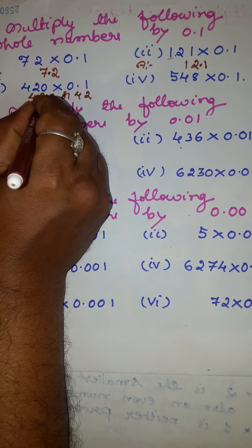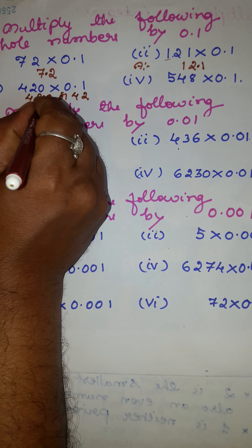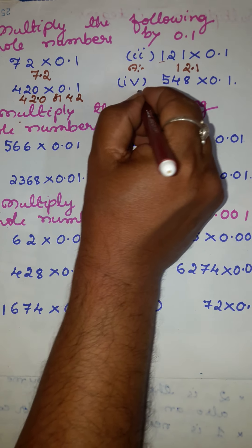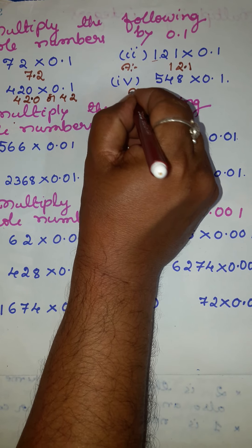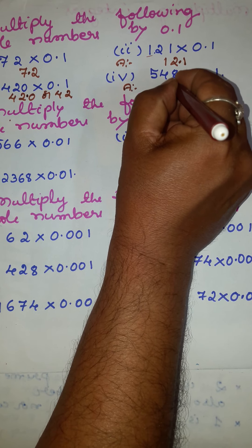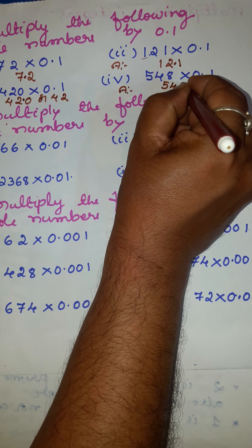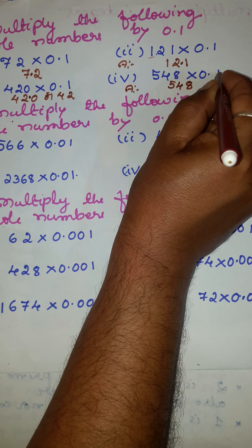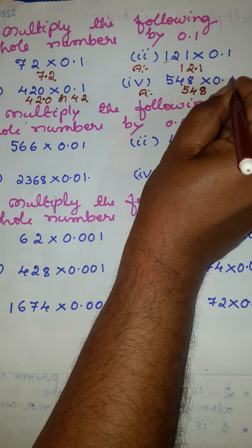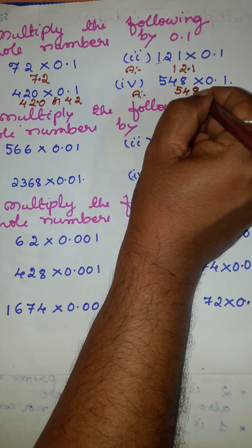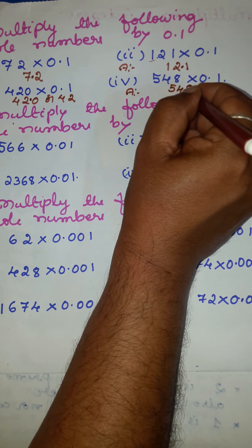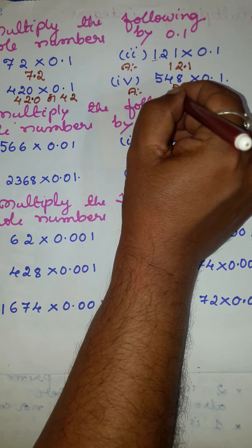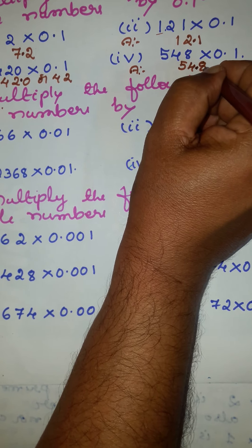Fourth example: write 548 as it is. After the decimal to the right one place is there, so count one place from right to left and put the decimal point here. The answer is 54.8.